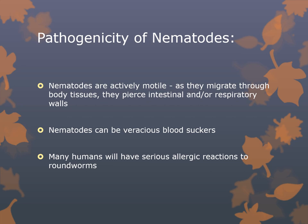Regarding the pathogenicity of nematodes: nematodes are actively motile and migrate through body tissues, piercing intestinal and respiratory walls. They can be voracious bloodsuckers, removing blood and nutrients from the host — hookworms are an example. Many humans have serious allergic reactions to roundworms, and some have a severe immune response as well.